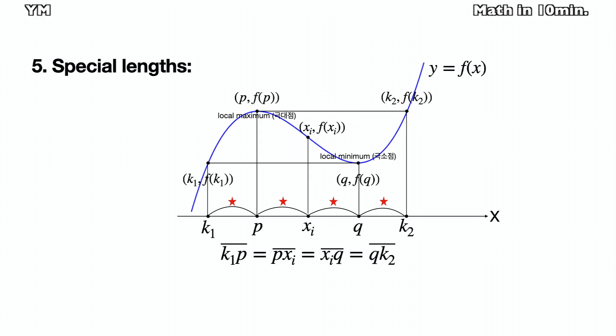At that time, we know that k1 less than p, less than xi, less than q, less than k2. Just x value, not f value. But they are so far away in the same distance, each other. In other words, all the lengths marked in the red star are equal. Again, the distances from k1 to p, p to xi, xi to q, and q to k2 are equal.